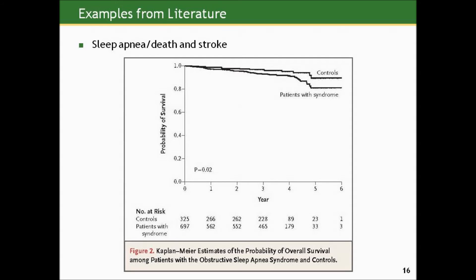That p-value is testing the null that the survival experience — time to event death or stroke — is the same for people with apnea and without. These are both estimates from smaller samples from a larger population, and a p-value of 0.02 suggests rejecting the null at the 0.05 level. They found a statistically significant difference in which those with apnea had worse prognosis than those without.